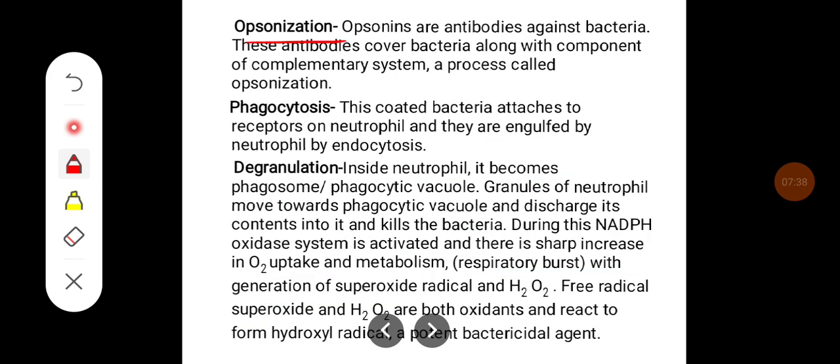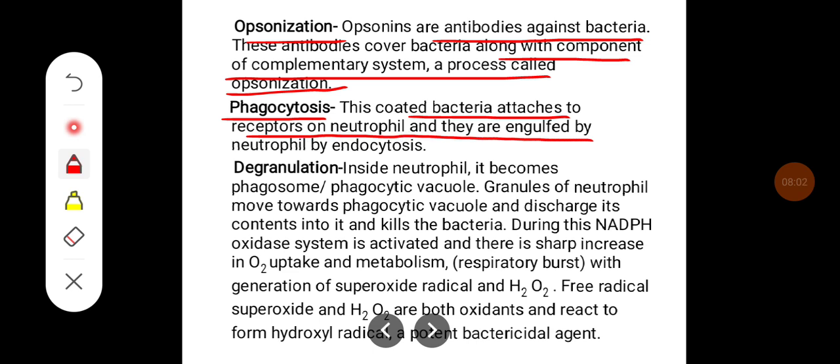Opsonization. Opsonins are antibodies against bacteria. These antibodies cover the bacteria along with the component of complementary system, a process called opsonization. Phagocytosis: this coated bacteria attaches to receptors on neutrophil and is engulfed by neutrophil by endocytosis.